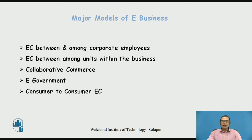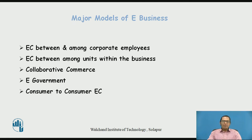What are the major models of electronic business? Once we understand the difference between electronic commerce and electronic business, we can look at the different major models. These include: transactions between and among corporate employees; transactions between different functional units within the same organization; collaborative commerce; electronic government; and consumer-to-consumer transactions.